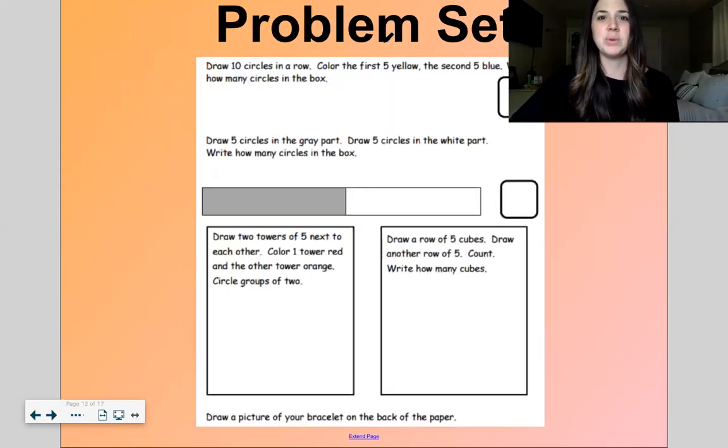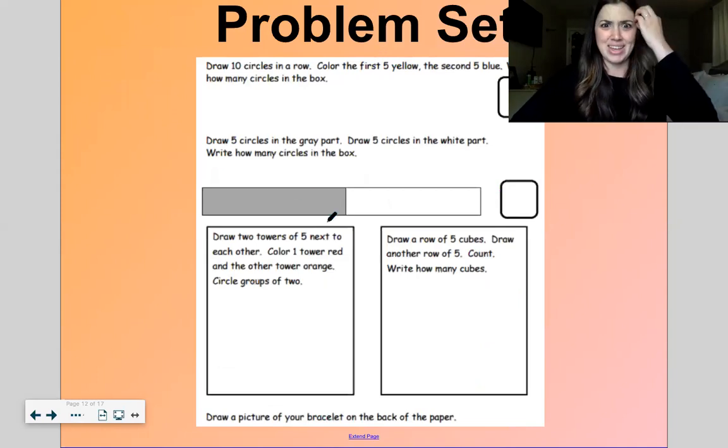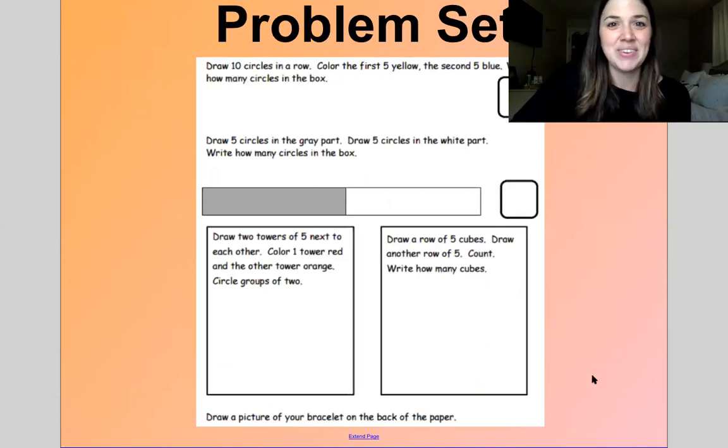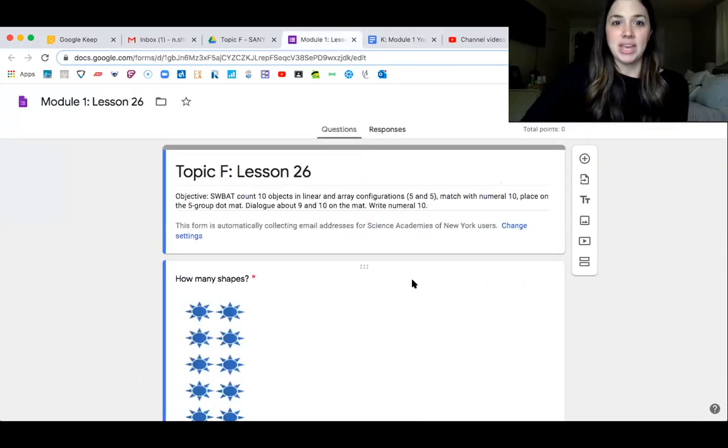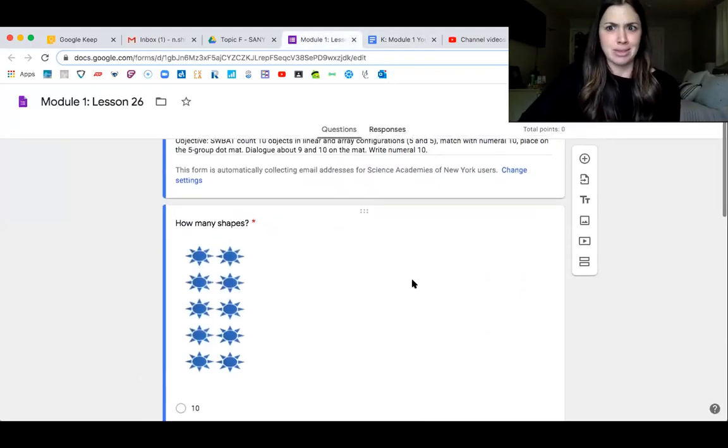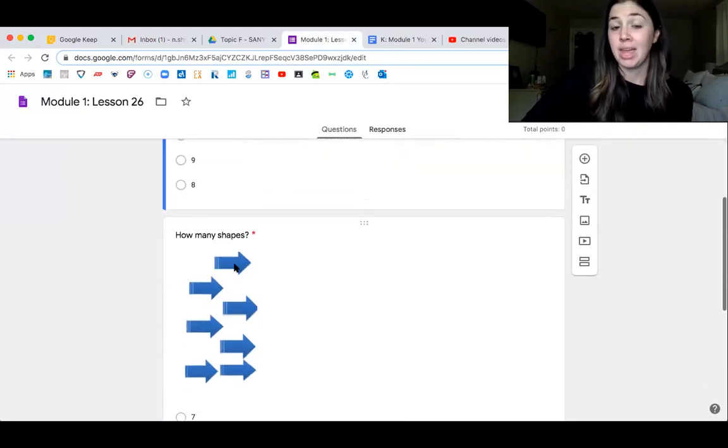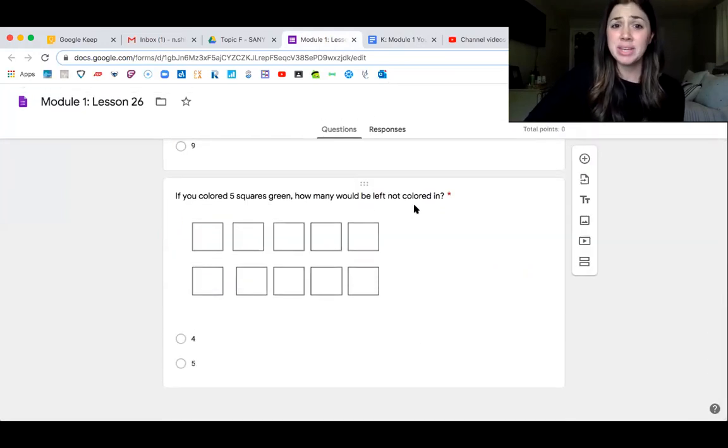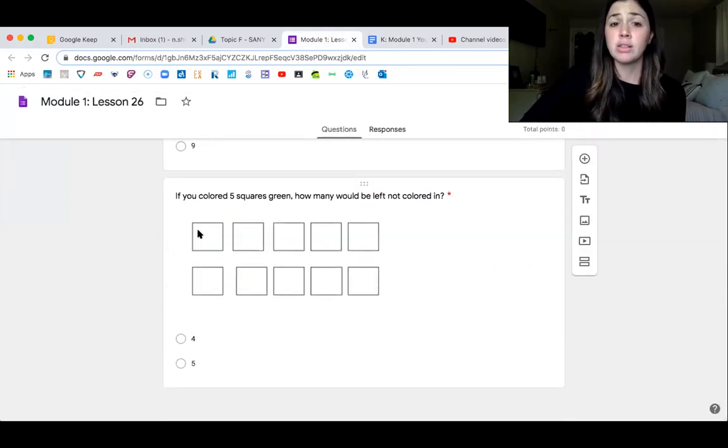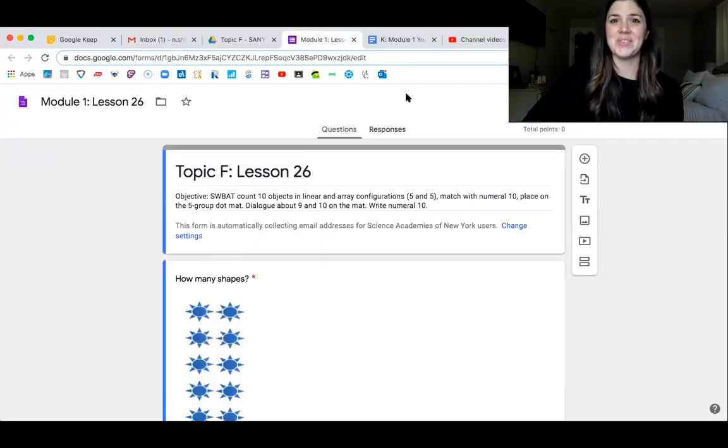All right, let me show you your exit ticket for the day. I told you this is gonna be a fast math lesson. So for your exit ticket, listen carefully because there's something down at the bottom that's a little bit tricky. You're gonna count the shapes here, count the arrows here, and then down here, if you colored five squares green, how many would be left not colored in? Then choose that number.